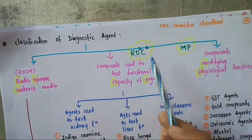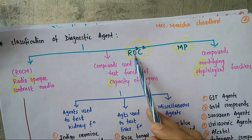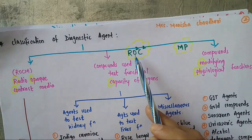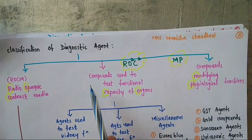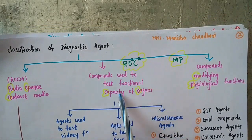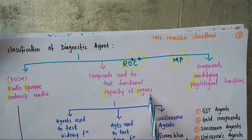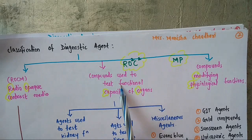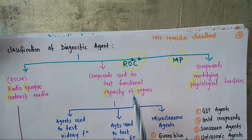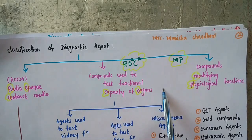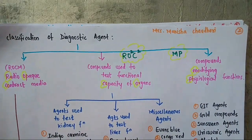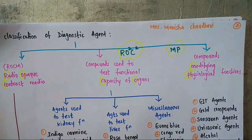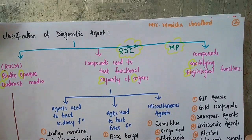And OC stands for organ capacity — that means compounds used to test the functional capacity of the organ, i.e., whether the organ is functioning to its optimum capacity or not. Now we will see each class one by one along with examples.